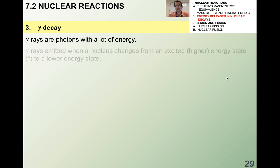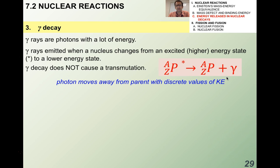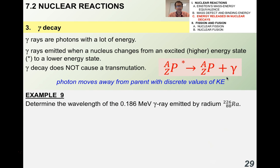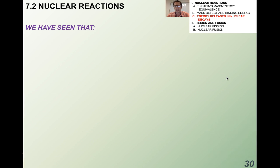Gamma decay: gamma rays are photons with a lot of energy — they're dangerous and you don't want to be exposed to them. Gamma rays are emitted when a nucleus changes from an excited higher energy state to a lower one and emits a photon. Gamma decay does not cause a transmutation. As an example, determine the wavelength of the 0.186 MeV gamma ray emitted by radium. Using E equals hc over lambda, you get a wavelength of 6.68 times 10 to the minus 12 meters.